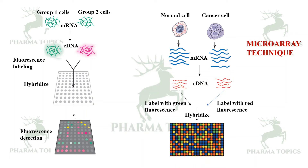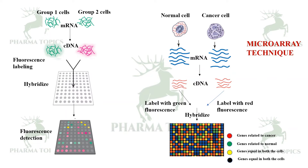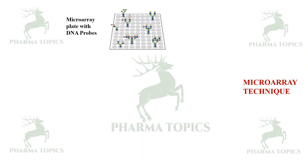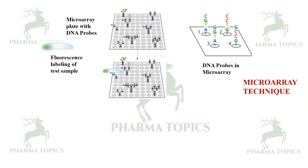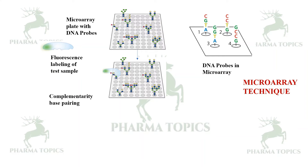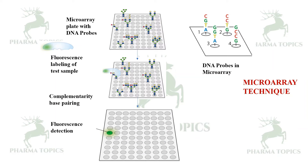After hybridization, fluorescence is detected. Genes related to cancer, genes related to normal cells, and genes common to both types of cells can be identified from the resulting fluorescence pattern. In another simpler example, a microarray plate with DNA probes has different probes arranged on it, a test sample labeled with a fluorescent dye is applied, complementary base pairing occurs, and fluorescence is detected.